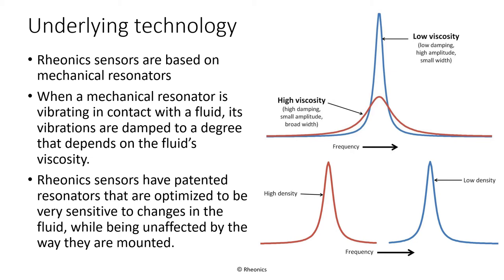Rhionics sensors are based on mechanical resonators. When a mechanical resonator is vibrating in contact with a fluid, its vibrations are damped to a degree that depends on the fluid's viscosity. The upper figure shows the resonance curves of how a resonator's damping changes with fluid viscosity — these curves show the amplitude of the resonator as a function of frequency. As viscosity increases, the extra damping reduces the size of the response, but also increases the resonator's bandwidth. When a resonator is moved from a fluid with a lower density to one of a higher density, its resonance frequency decreases in proportion to the fluid's density, as shown in the second figure.